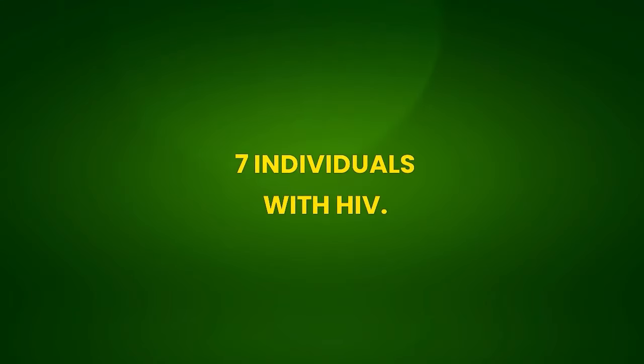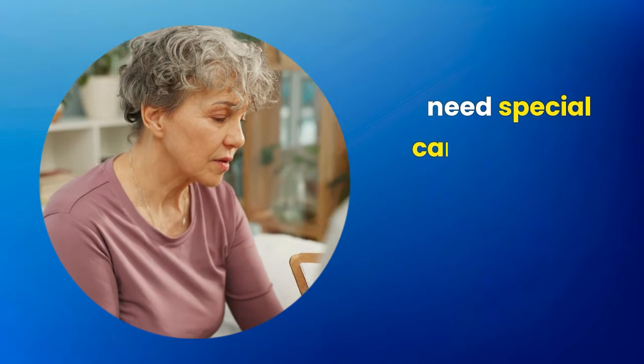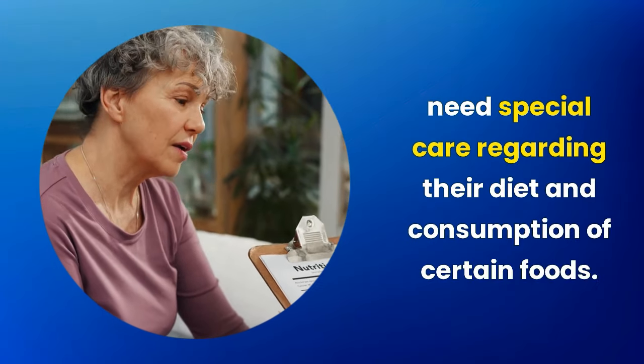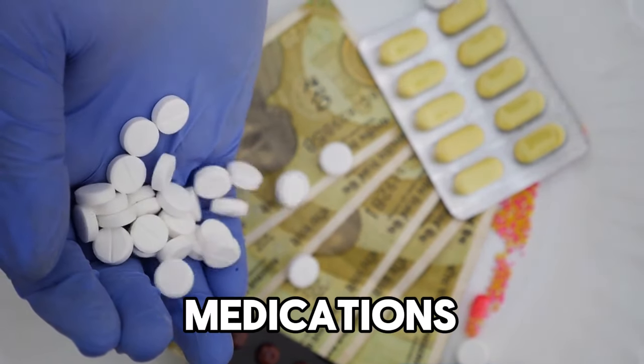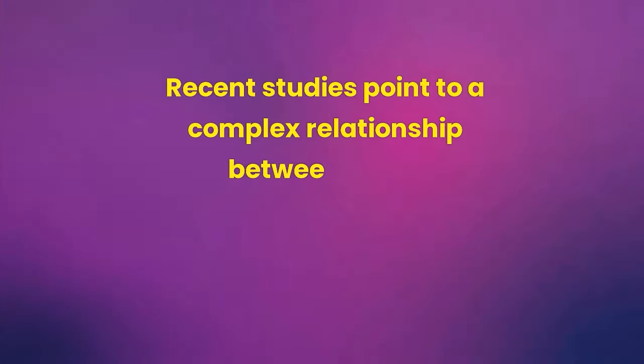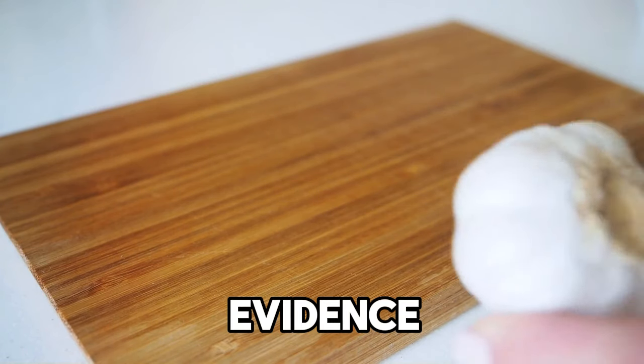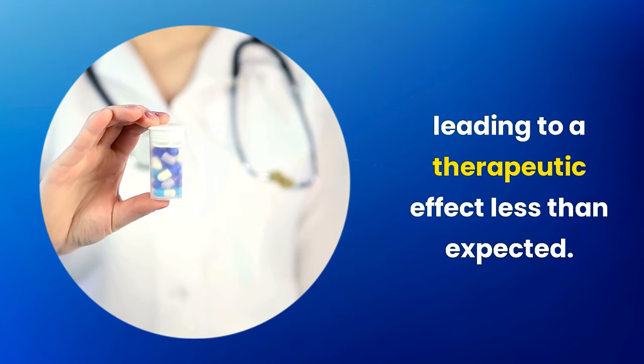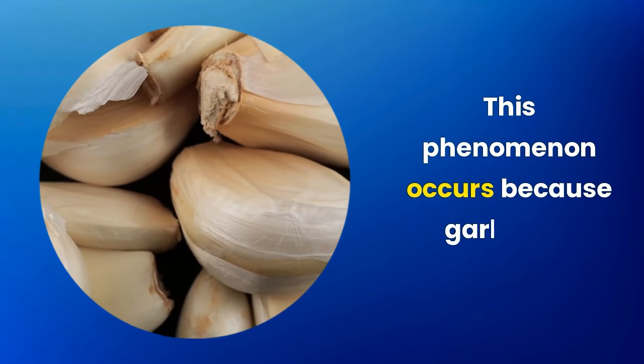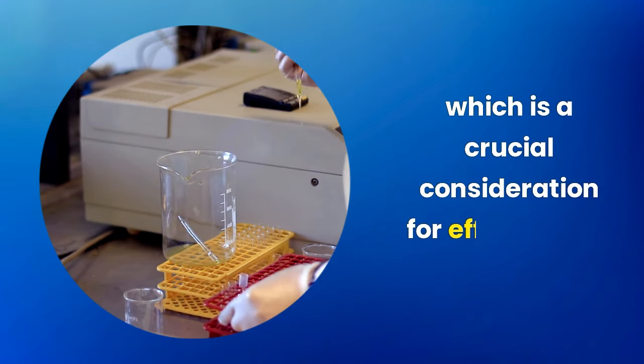7. Individuals with HIV. Patients with HIV who are under antiretroviral treatment need special care regarding their diet and consumption of certain foods. One important aspect to consider is the impact of garlic on the effectiveness of these medications. Recent studies point to a complex relationship between garlic consumption and the bioavailability of antiretrovirals. On one hand, evidence suggests that excessive and daily use of garlic can decrease the effectiveness of antiretrovirals, leading to a therapeutic effect less than expected. This phenomenon occurs because garlic can interfere with the absorption of the medication by the body, which is a crucial consideration for effective HIV treatment.